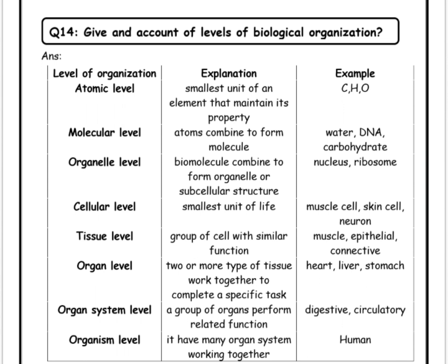A group of organs performing related functions makes up the organ system level. Different systems of living things include the digestive system, circulatory system, nervous system, respiratory system, and excretory system.